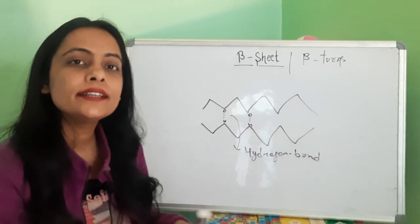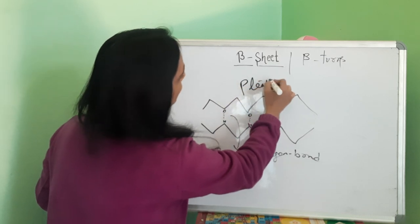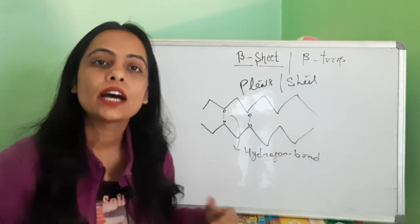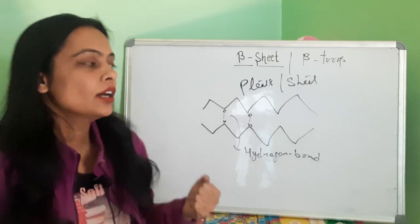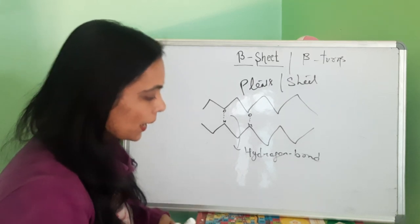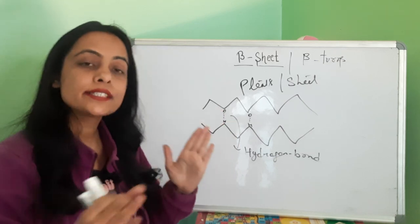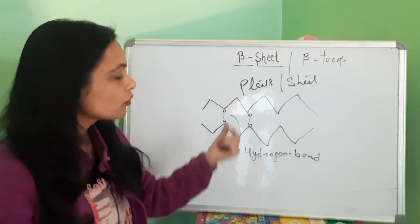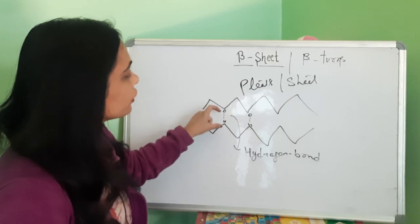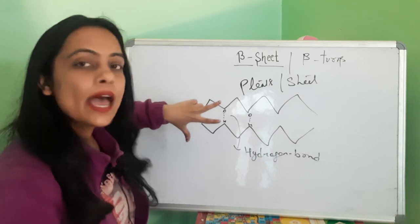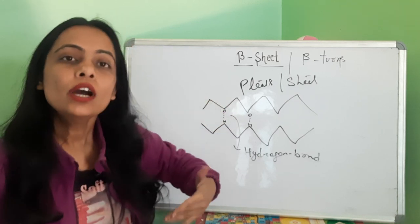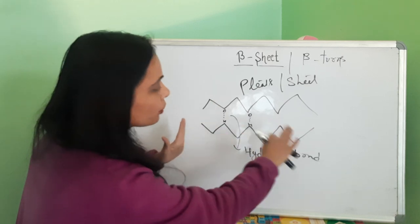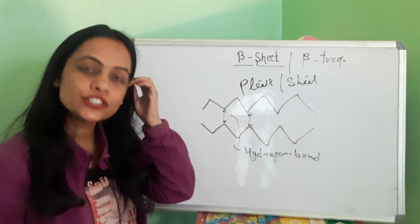The polypeptide segments are fully hydrogen bonded, and this creates a pleated sheet-like structure. The sheet-like structure is formed and this is called beta-sheet or beta-conformation of protein. When our polypeptides are in extended conformation in a zigzag manner, and they are side-by-side, there is inter-molecular hydrogen bonding between two segments of extended polypeptides, creating the beta-plate-like or sheet-like structure.